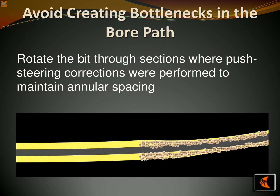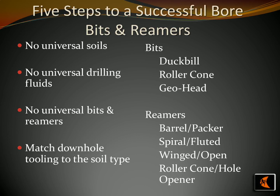This helps to achieve a good mix of bentonite layers between 35,000 and 40,000. When drilling boreholes, the soil type should be taken into consideration to ensure the right drill bits and reamers are chosen. Different types of drill bits and reamers can be used, such as duckbill, roller cone, geohead, barrel, packer, spiral, fluted, winged, open, and roller cone hole opener. Matching the right equipment to the soil type is essential for a successful borehole, as there is no one-size-fits-all solution, and the drill fluid must be tailored to the job and soil type.